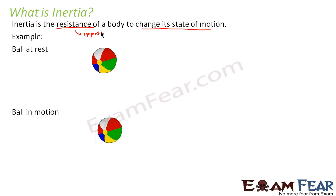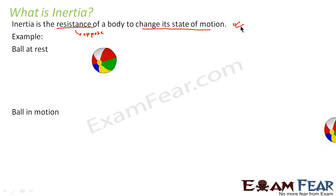Similarly, if we have a ball in motion, that ball will want to keep moving. So something which is at rest will always want to be at rest, and something which is in motion will always want to be in motion. So inertia is basically the property of any body to remain in its own state of motion — it is the resistance of a body to change its state of motion.